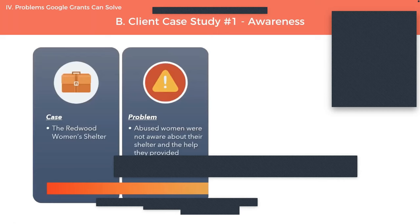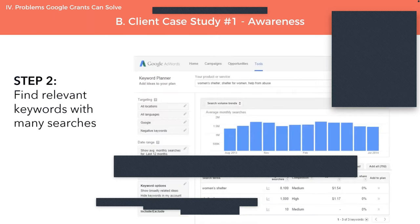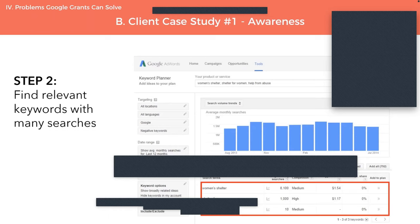In our first example, we have the Redwood Women's Shelter. They had an issue of awareness — they had services for abused women, but many of these women didn't know their organization existed. The Redwood Women's Shelter obtained the grant and then looked to their website, finding a page with relevant information: the number for their 24-hour crisis hotline and information about the services they provided. Next they went to the Google Keyword Planner, which helps you find the search volume for certain keywords — essentially how many times is a keyword getting searched on Google every month. They typed in keywords like 'Women's Shelter' and 'Shelter for Women,' then chose the keywords with the highest monthly search volume.